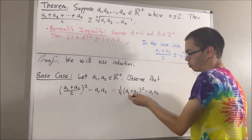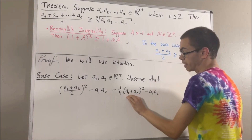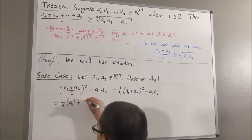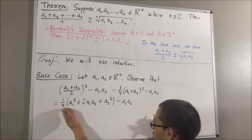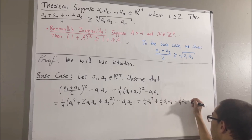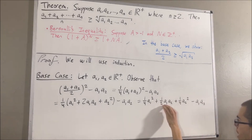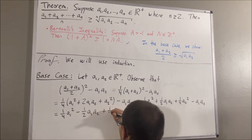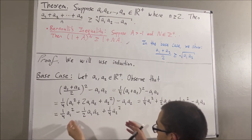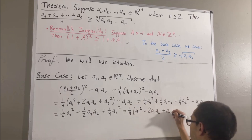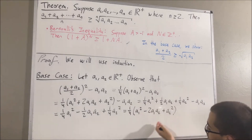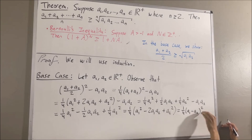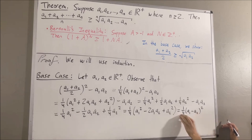If we expand out the other parentheses, we know that this is just going to be equal to a1 squared plus 2 a1 a2 plus a2 squared. And then, if we distribute the 1 fourth across, and notice we can do 1 half a1 a2 minus a1 a2, which gives us minus 1 half a1 a2. And now, we can take these terms and factor out a 1 fourth. What we have in the parentheses is just equal to a1 minus a2 squared. And we know that any real number squared is greater than or equal to 0. Multiply it by a positive number, it's still greater than or equal to 0.